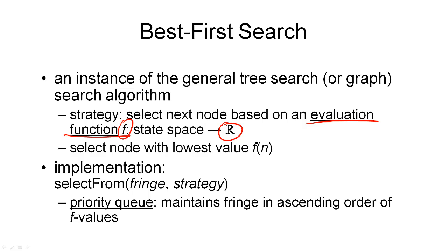Again, if we had a perfect evaluation function, we could use the search to lead us straight to the goal node. Note that the evaluation function is not problem-specific — it is specific to the algorithm. But the evaluation function may use the heuristic function, which is problem-specific. What we mean by 'best' in best first search is simply defined by the evaluation function: the node that is best has the lowest f value.